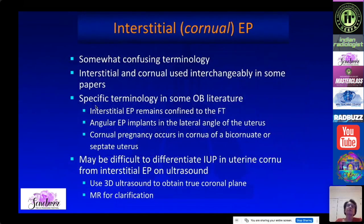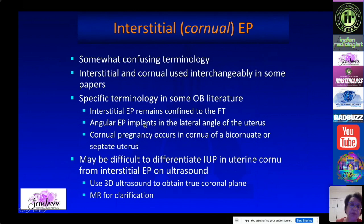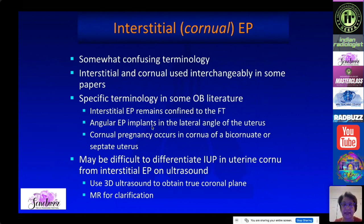Regarding terminology: the OB literature now recommends calling these pregnancies interstitial, not cornual. Cornual pregnancy is reserved for pregnancies that occur in the corner of a bicornuate or septate uterus. There is also another entity called angular pregnancy, which implants in the lateral angle of the uterus. So you have interstitial ectopic in the fallopian tube, angular pregnancy too lateral but still within the uterus, and cornual pregnancy in the corner of a duplicated uterus.